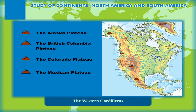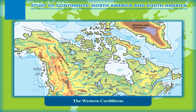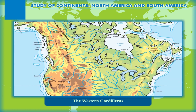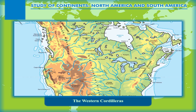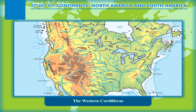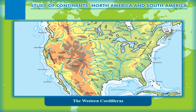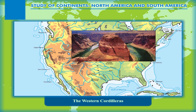These are the intermontane plateaus of the Western Cordillera region. The Great Basin is the largest intermontane plateau of North America and an area of inland drainage. The Great Salt Lake is a part of the Great Basin.